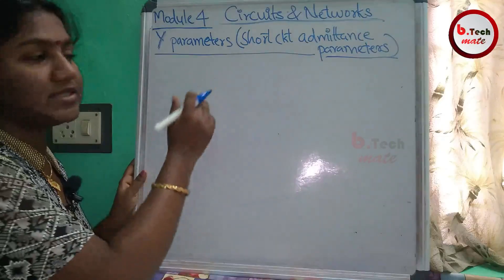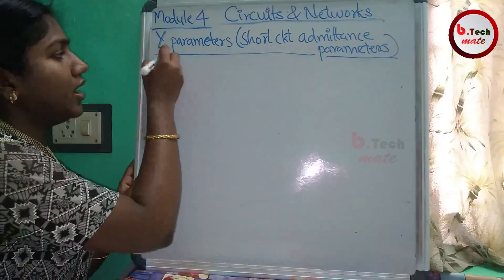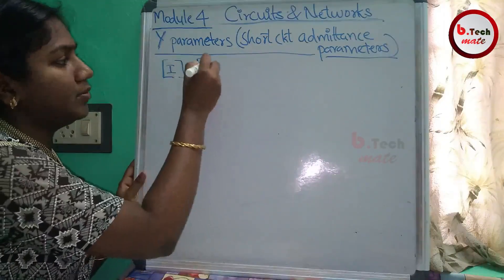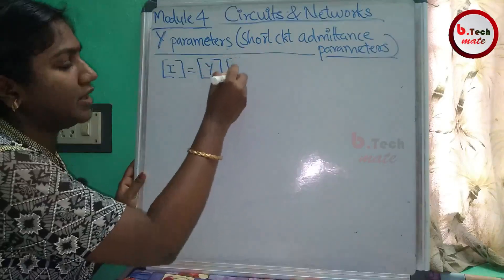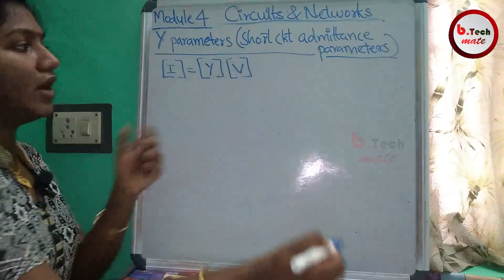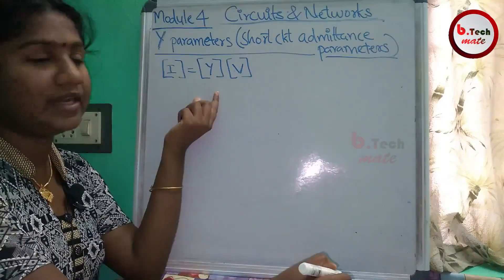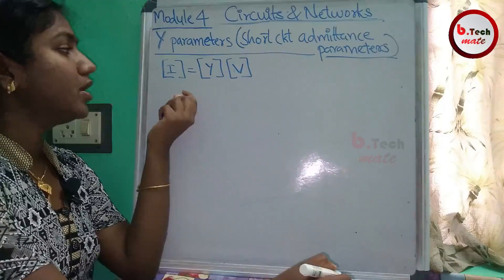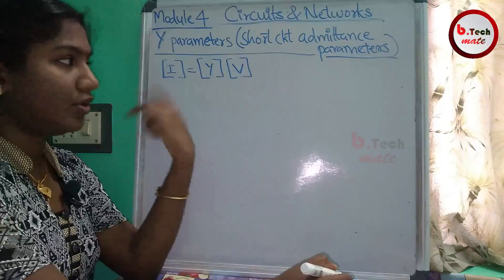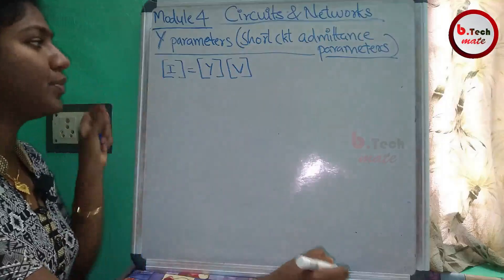This is the basic equation. Admittance Parameters: I equals matrix Y into matrix V. Admittance is the reciprocal of impedance. Z is V by I, so Y is I by V. That's what we have to do with the matrix.